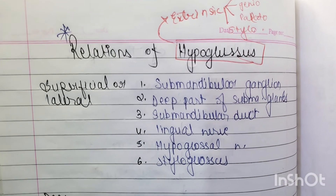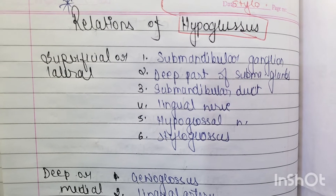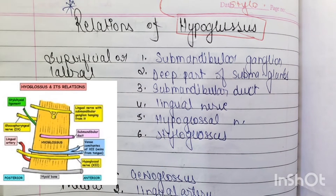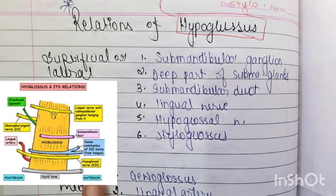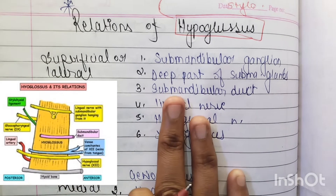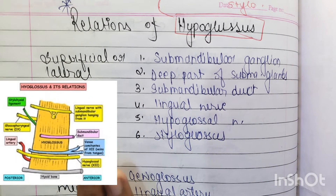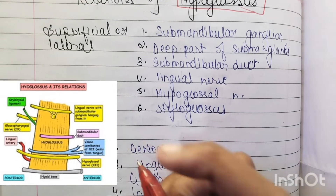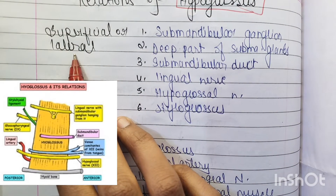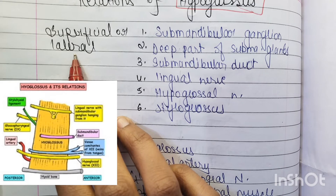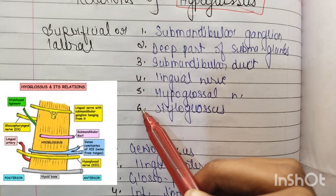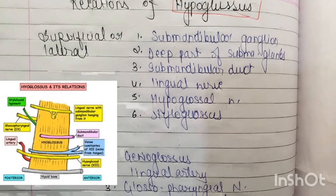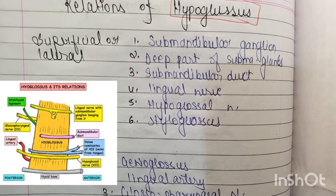Now let us come to the main part of the video — the relations of hyoglossus. We have mainly two categories of relations: superficial or lateral, and deep or medial. There are many questions on this topic in PG exams. Laterally, we have six relations of the hyoglossus muscle.